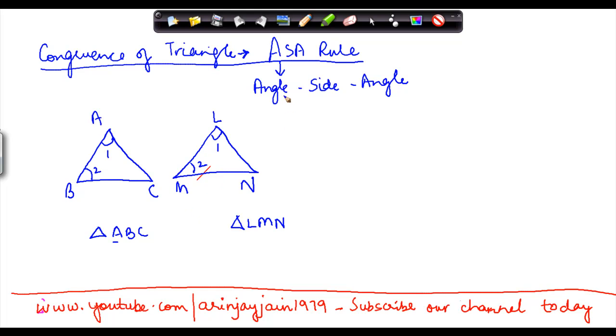The rule says that if two angles of a triangle, in this example it's angle-side-angle, so if two angles of a triangle, in our case it is angle 1 and angle 2, and the side between these two angles, which is AB in this case and LM in this case, are equal, then the triangles are congruent.